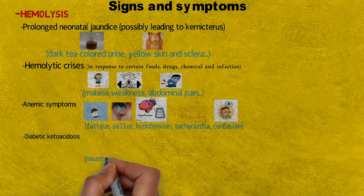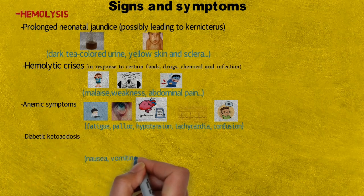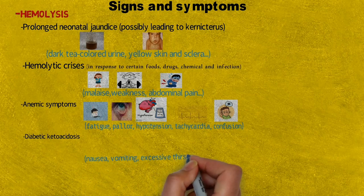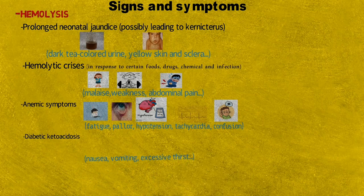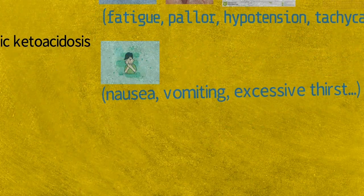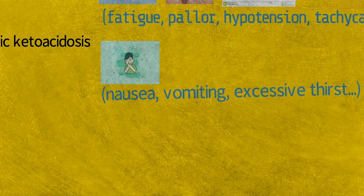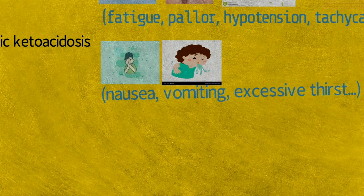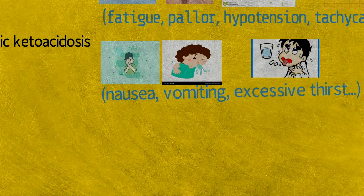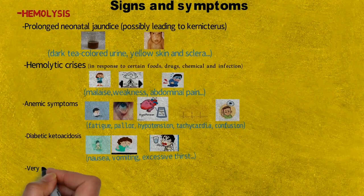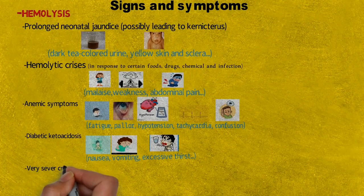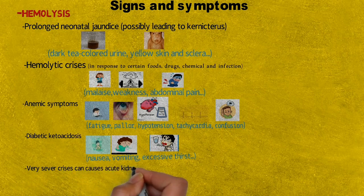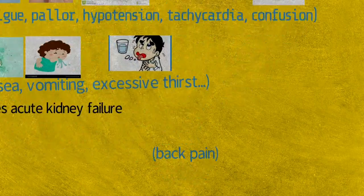Because of buildup of glucose there will be diabetic ketosis, with signs and symptoms like nausea, vomiting, and excessive thirst. In very severe crises, it can cause acute kidney failure, with the sign of back pain.